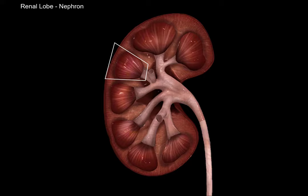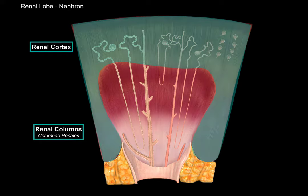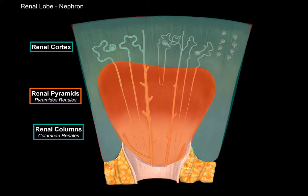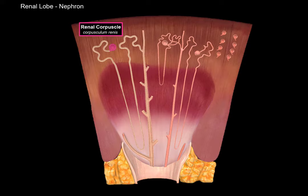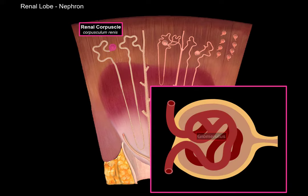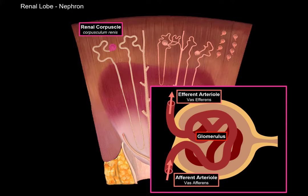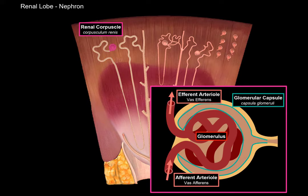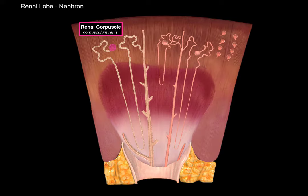Now let's do the anatomy of the nephron by isolating one lobe and looking at it in detail. The renal cortex and its renal columns are between the renal pyramids, and below the renal pyramids you'll find the minor renal calyces, which fuse to form the major renal calyces. The nephron consists of a renal corpuscle located in the renal cortex. The renal corpuscle consists of a glomerulus, which is made up of many capillary loops. Blood flows in through the afferent arteriole — 'A' stands for arrive — into the glomerulus, and exits as efferent arterioles — 'E' stands for exit. The glomerulus is surrounded by a glomerular capsule with an internal and external part, and the urine flows between those two layers.